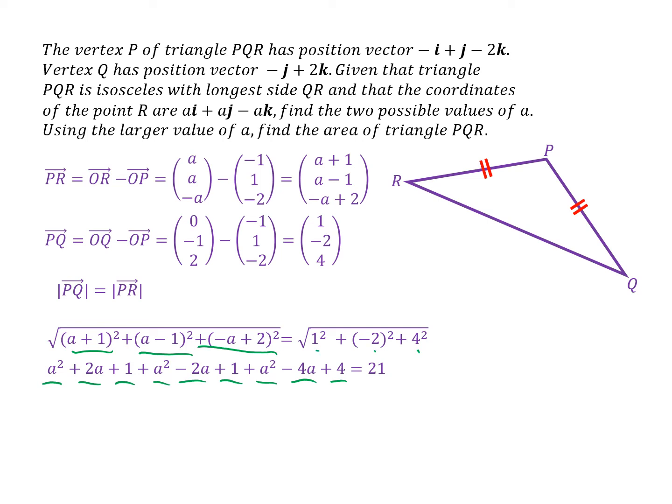So rearranging this, simplifying it into the standard quadratic form gives me this equation. And this equation has two answers, three and minus five thirds. And we were expecting two answers. The question says, find the two possible values of A. So those are the two possible values of A.